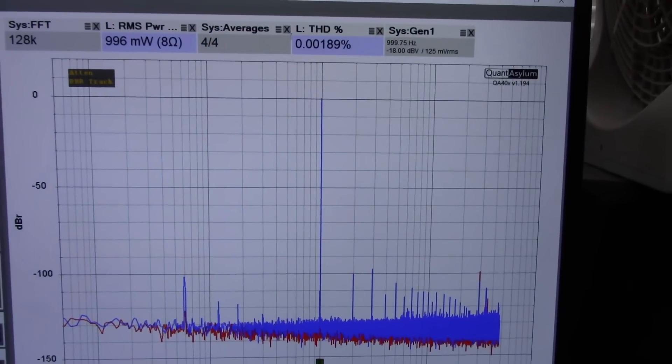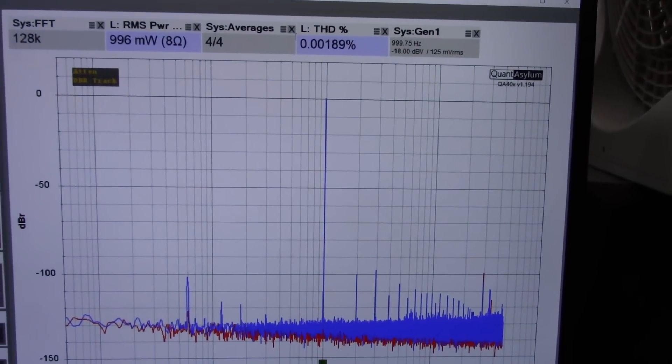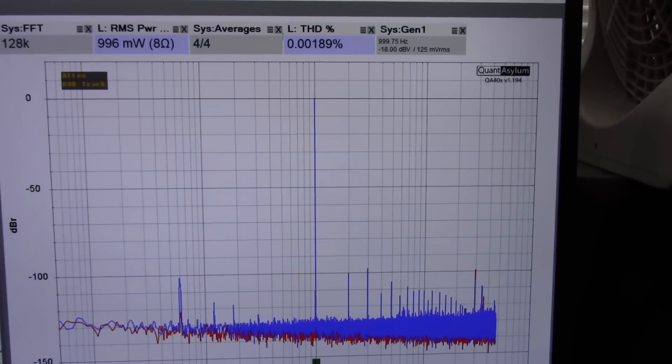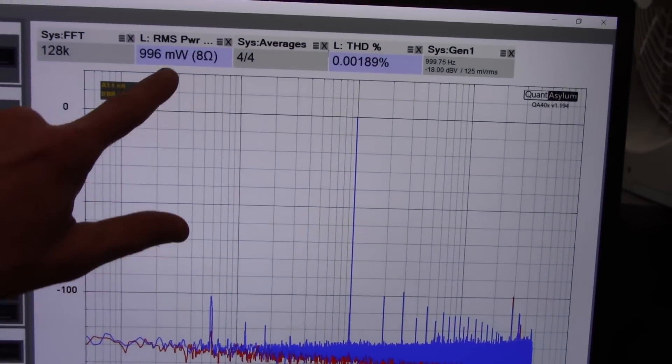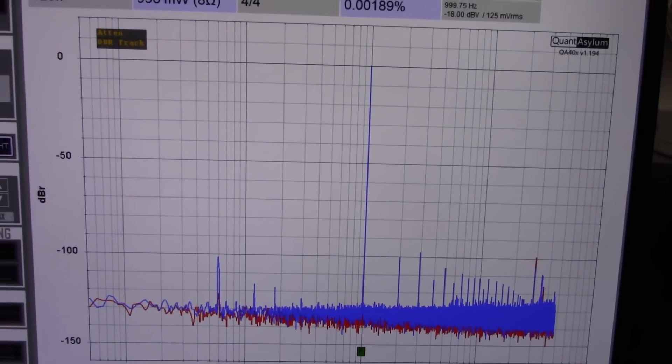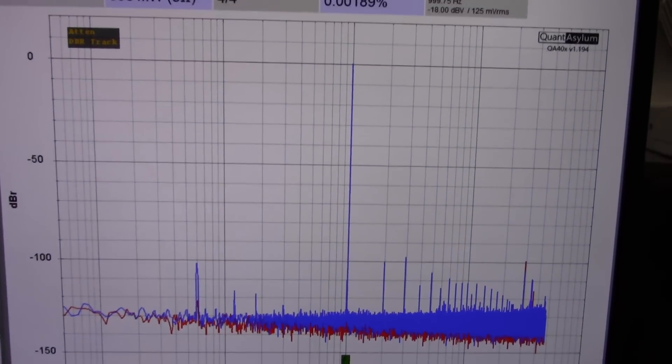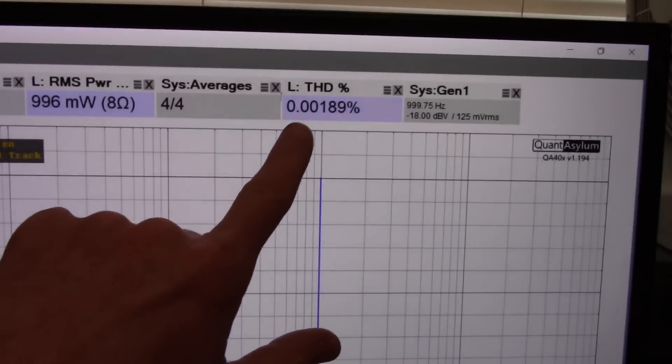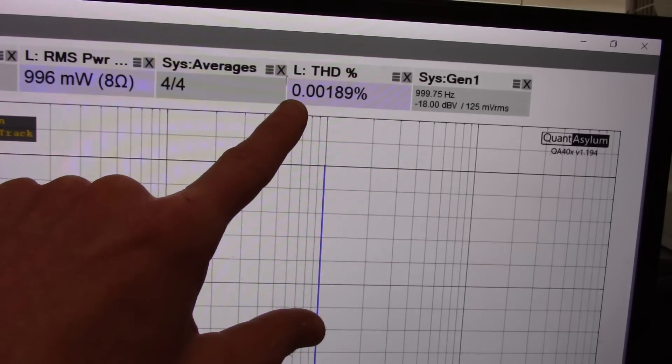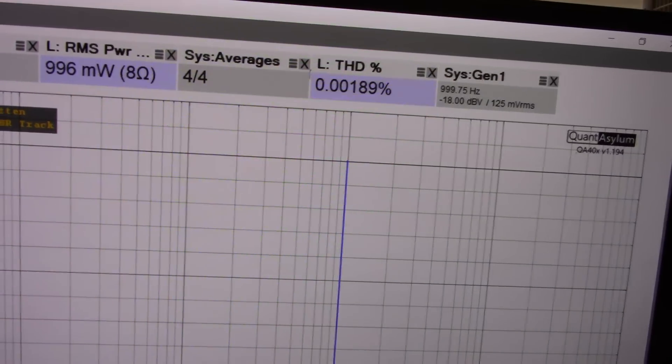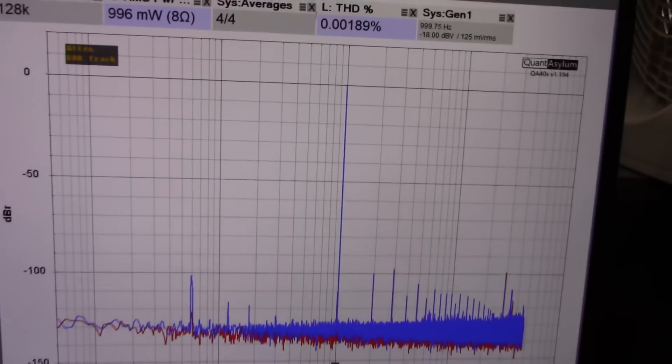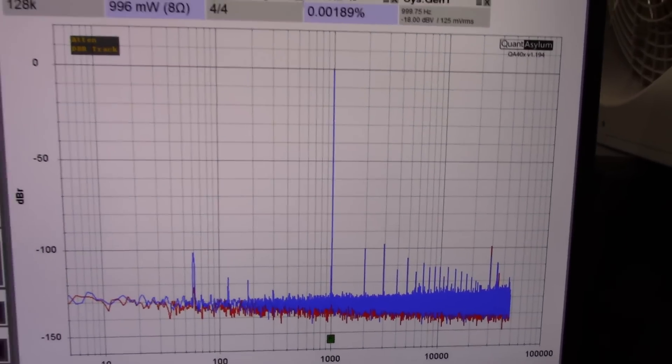Well folks, I was not expecting this. This is just totally unreal to me. This is the TDA2050 8 ohm load, running it at 1 watt which would be considered a normal listening level. And look at this distortion. 0.001. You know it's about 0.002. Incredibly low. I mean this is just a cheapo chip amplifier. Unbelievable.